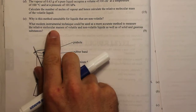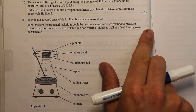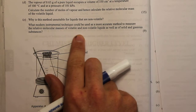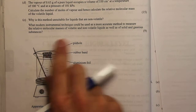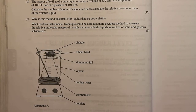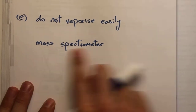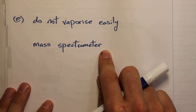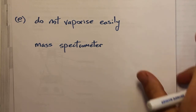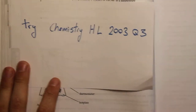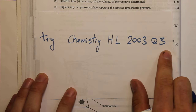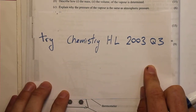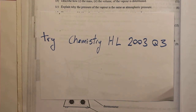The modern instrumental technique that could be used as a more accurate method to measure relative molecular mass of volatile and non-volatile liquids, as well as solids and gaseous substances, is a mass spectrometer. That completes this question. Now try the Chemistry Higher Level 2003 Question 3, a very similar question, to put into practice what you've learned in this video.